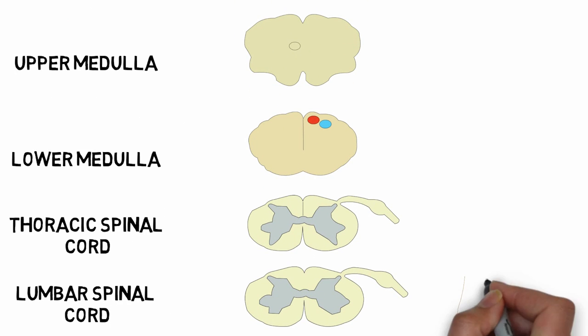So we have the sensory fibers which bring the information from the lower part of the body enter the spinal cord at the level of lumbar vertebrae. These fibers directly ascend upwards till the lower medulla on the same side of the spinal cord.